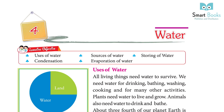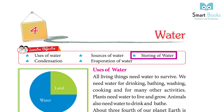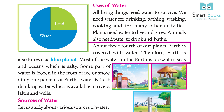Chapter 4: Water. Learning objectives: uses of water, sources of water, storing of water, condensation, and evaporation of water. All living things need water to survive. We need water for drinking, bathing, washing, cooking, and many other activities. Plants need water to live and grow. Animals also need water to drink and bathe.